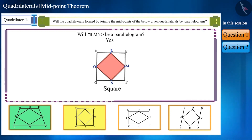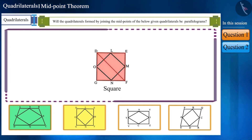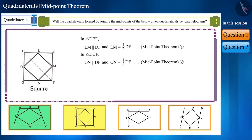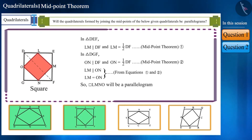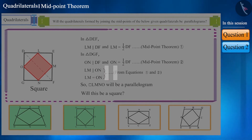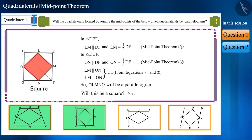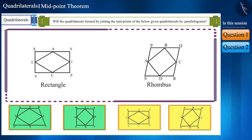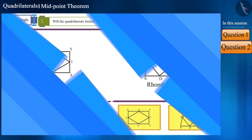The second quadrilateral DEFG is a square. Will the quadrilateral LMNO formed by joining its midpoints also be a parallelogram? By drawing diagonal DF to get triangles DEF and DGF and applying the midpoint theorem, LM is parallel and equal to ON, so quadrilateral LMNO is a parallelogram. Looking at it carefully with a scale and protractor, you will find that the measurements of its sides and angles show it is also a square.